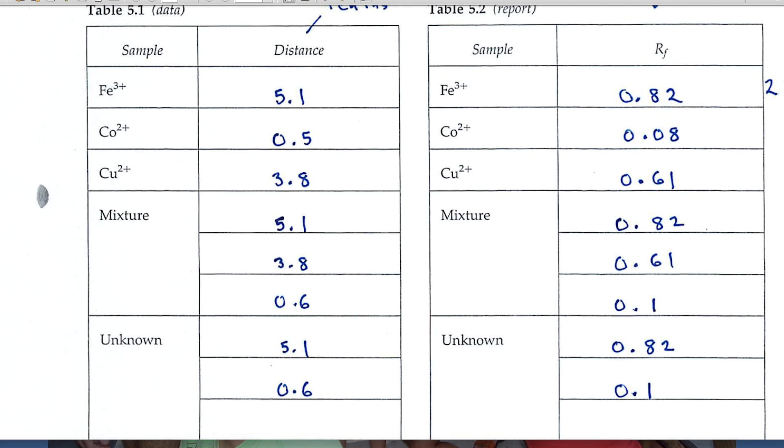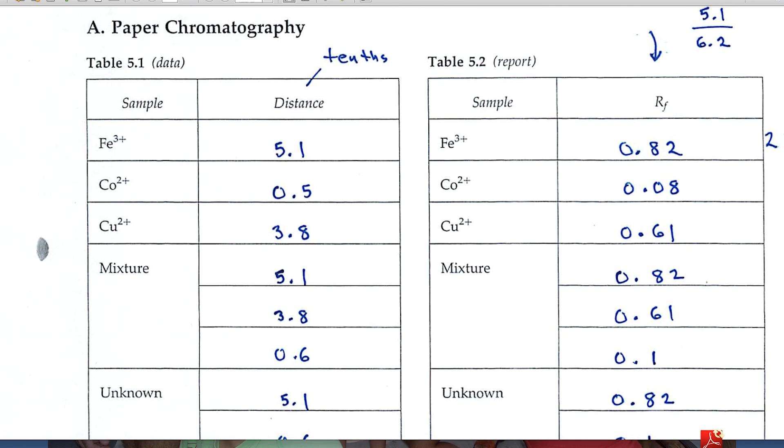We'll be separating iron, cobalt, and copper ions. When the chromatogram is finished, that is to say when the solvent has reached the top, it's removed from the chamber. You have a way of visualizing the ions where they've moved on the paper, and then you'll measure the distance that these ions have progressed. And I just put down some typical numbers here. When you record these numbers, keep in mind that you want to record them to the tenth.